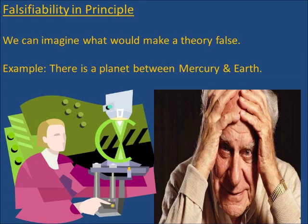Good theories are testable, but no theory can be completely tested because scientists cannot observe the future or the past. This is one reason why Karl Popper proposed that good scientific theories are those that can be falsified in principle. This means we can imagine what would make the theory false, and if we can imagine what would make it false, then we can, in principle, test it in a deeper way.